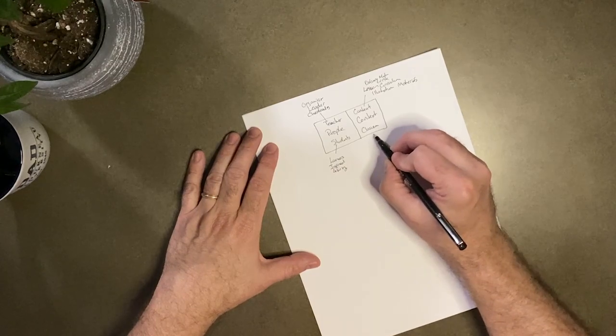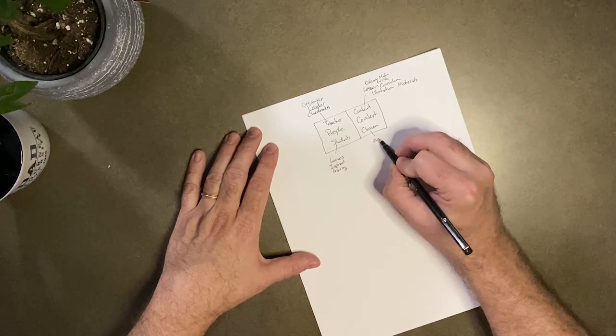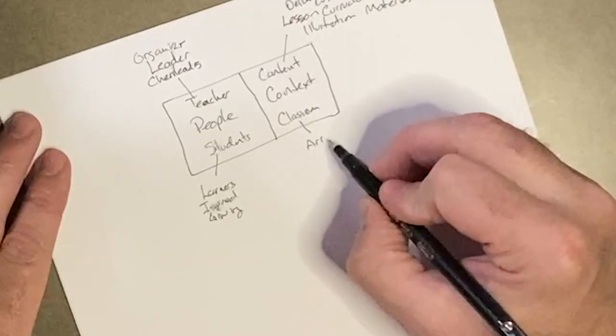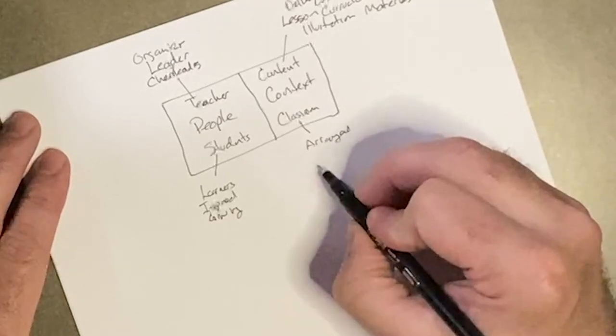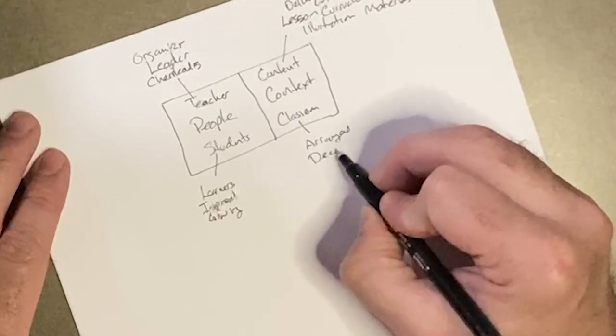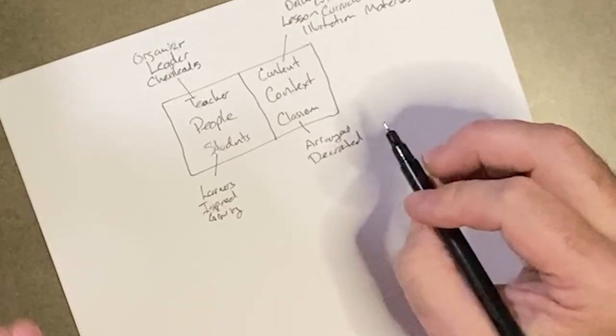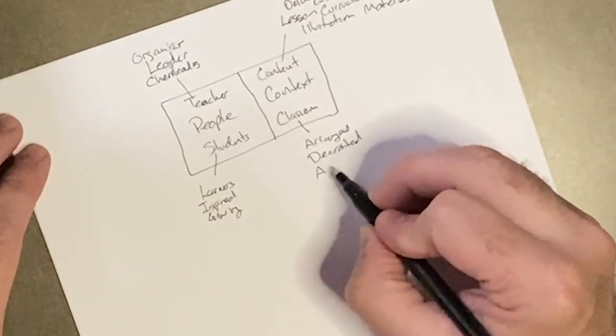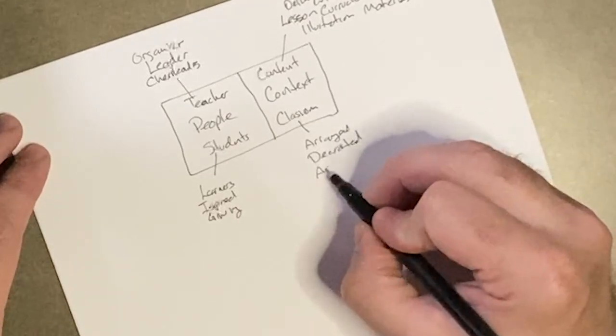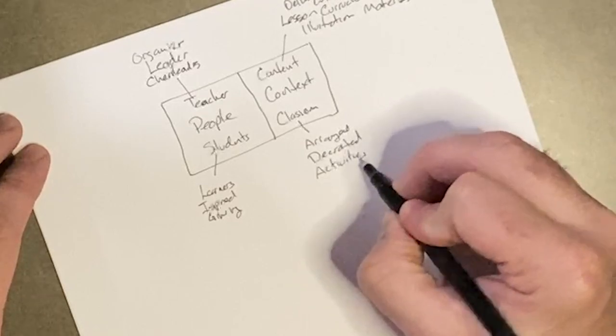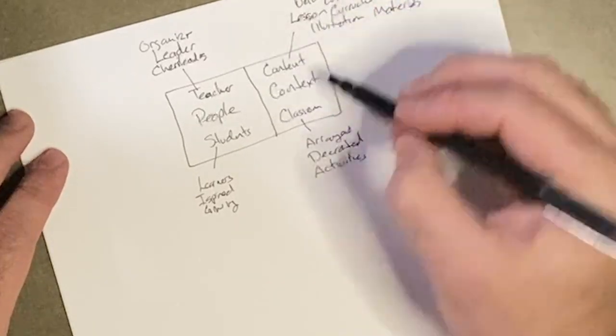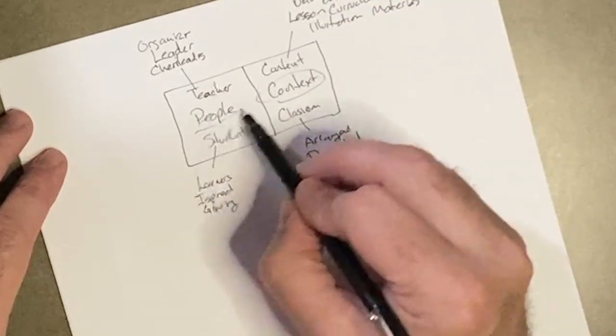So this classroom — what is it? This is your arrangements: how do you have your classroom arranged? How do you have your room decorated? What kind of activities and things do you do inside that classroom? This is the context, all of these things, and these are the people. The question is: what's the most important one out of all four of these things?